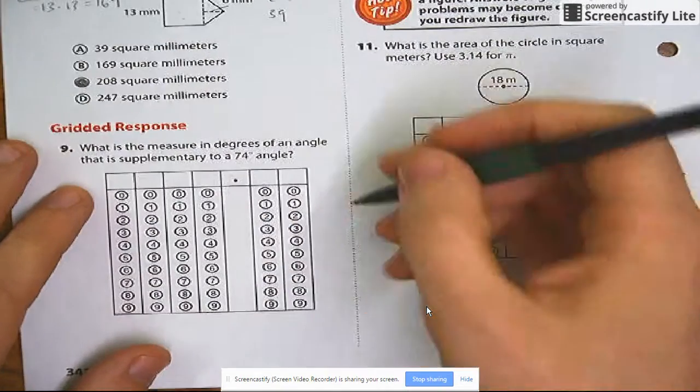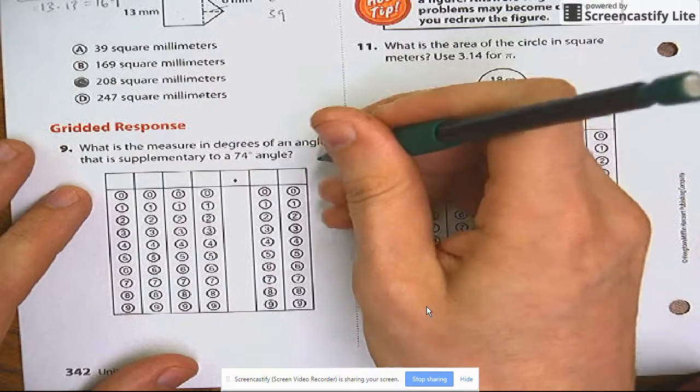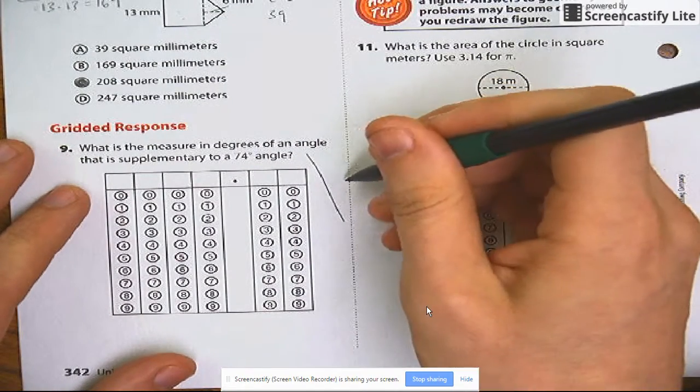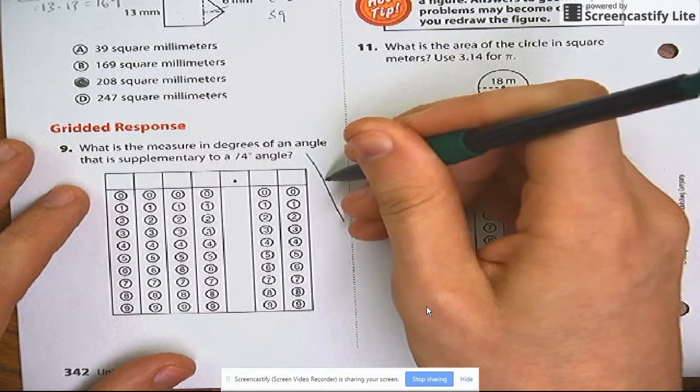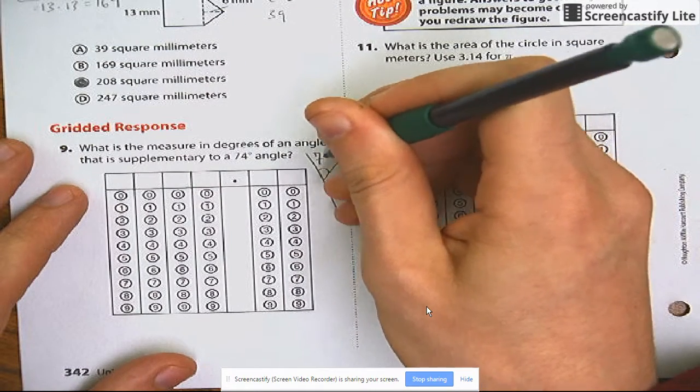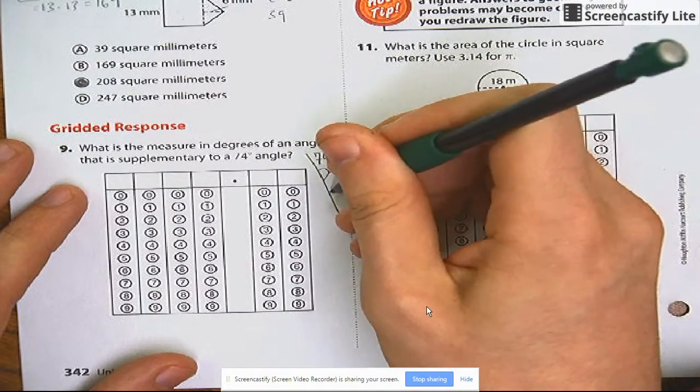Supplementary. We drew this angle that one day. Supplementary means that two angles, they form a line. Okay, that's all it means. So if I draw a line and I split it into two parts, maybe this one's 74. This one is its supplement.